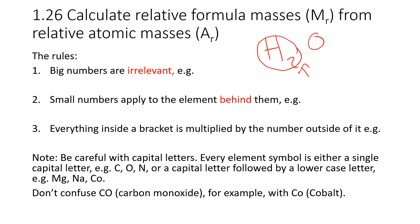In addition to that, and as you saw earlier with the calcium hydroxide, everything inside a bracket is multiplied by the number outside of it. So for example, when we had calcium hydroxide, Ca(OH)2, that's made up of one Ca atom, two oxygens, and two hydrogens. Because everything inside that bracket was multiplied by two.